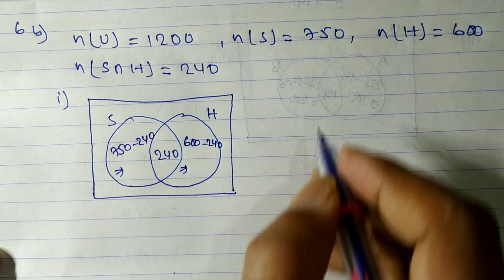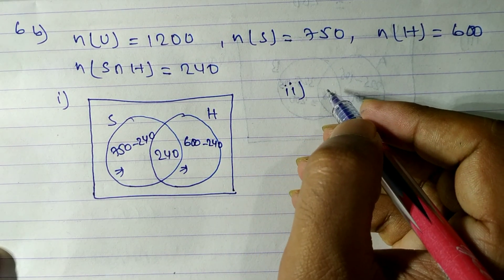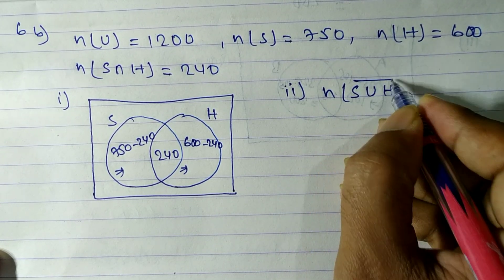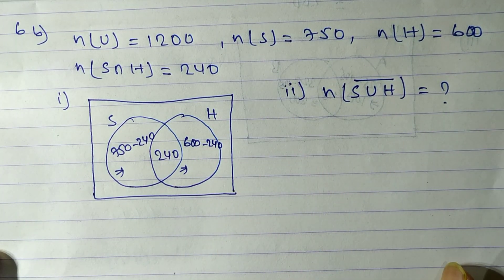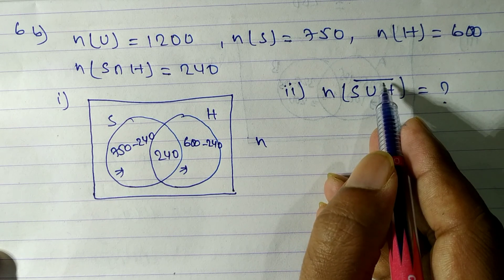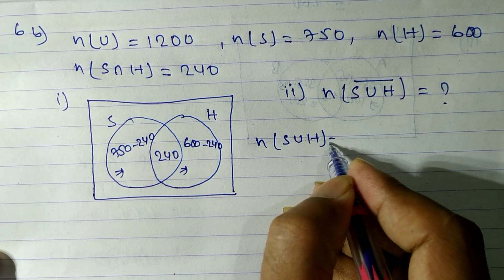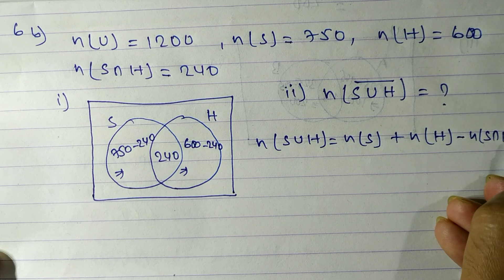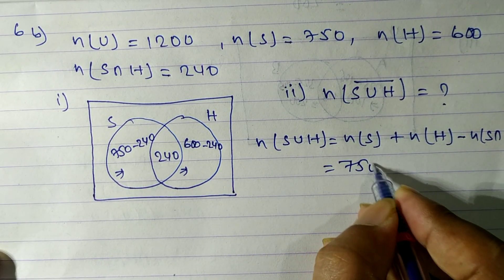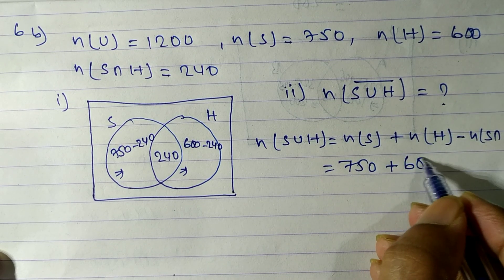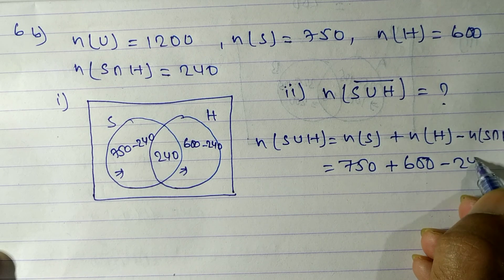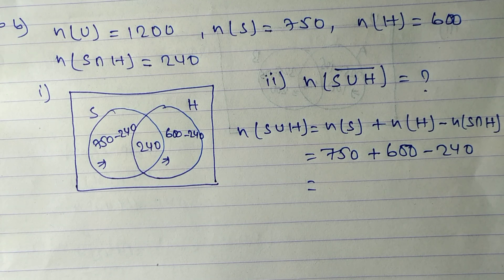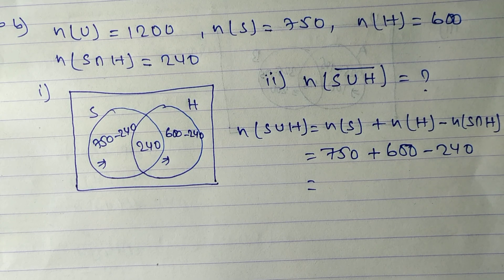In number two, we have to find who do not like to be admitted in both faculties — S∪H complement. First we find n(S∪H). The formula is n(S) + n(H) − n(S∩H). n(S) = 750, n(H) = 600, n(S∩H) = 240. So n(S∪H) = 750 + 600 − 240.